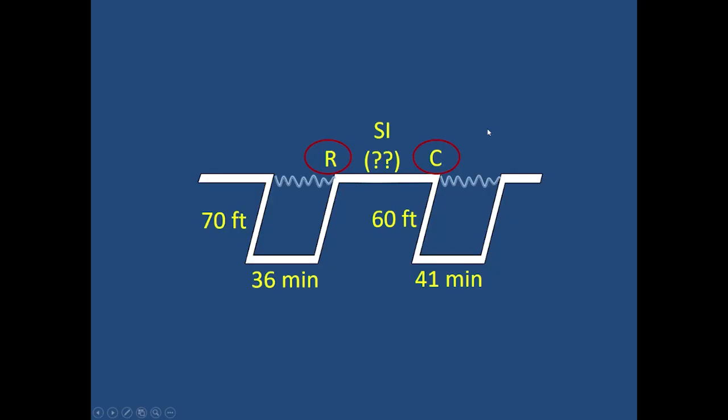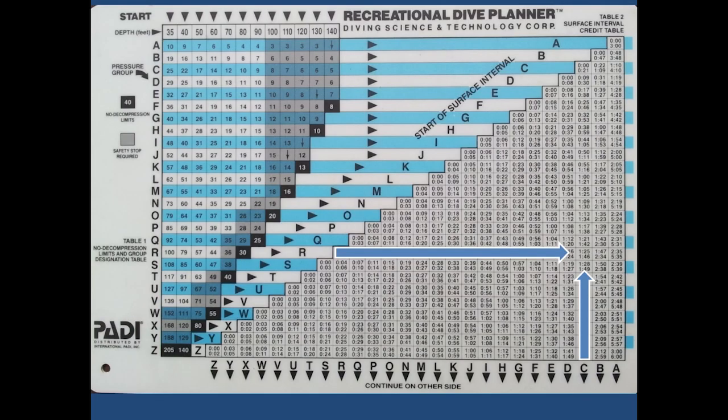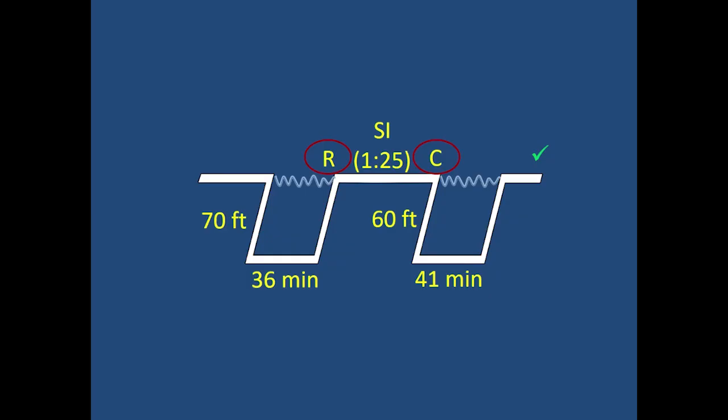And so that's what we need. Now we have the two pressure groups, the one before the surface interval, the one after the surface interval. All we have to do now is go to table number one and intersect those two pressure groups, pressure group R and pressure group C. So that's the one. And we're going to find that the minimum surface interval is going to be 125. And that's the correct answer to that final exercise.